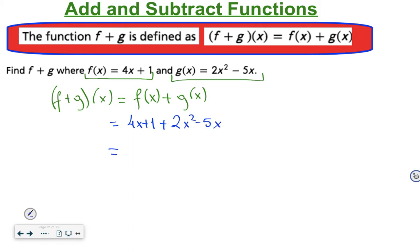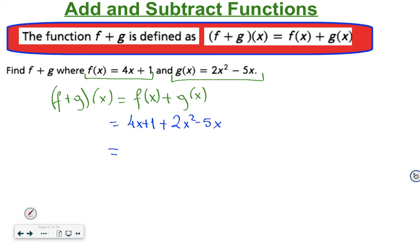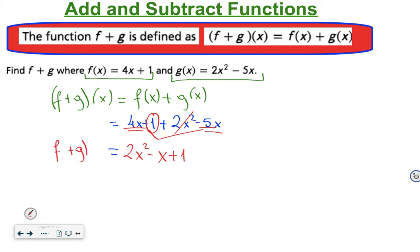After that, we combine like terms. Is there any other x squared in the expression? No, just 2x squared. Are there any x terms? Yes: 4x and negative 5x. Combining those gives negative x, plus 1. So (f + g)(x) equals 2x squared minus x plus 1.